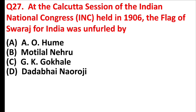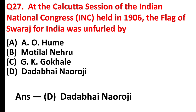At the Calcutta session of the Indian National Congress held in 1906, the flag of Swaraj for India was unfurled by? Answer is option D: Dadabhai Naoroji.